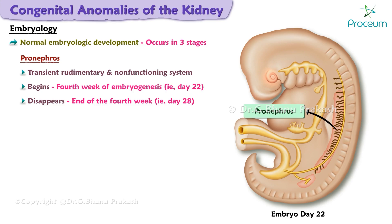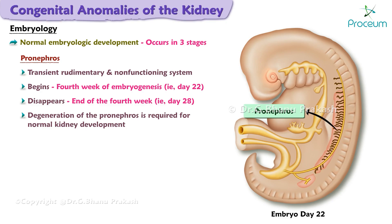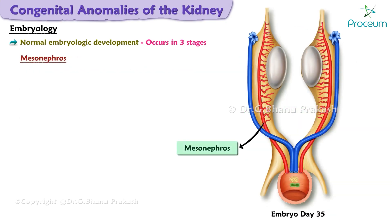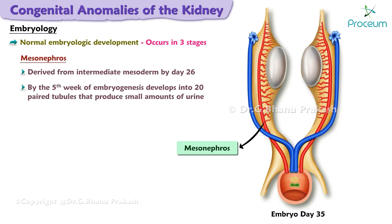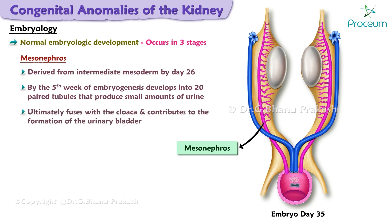Degeneration of the pronephros is required for normal kidney development. The mesonephros is derived from the intermediate mesoderm by day 26 and by the fifth week of embryogenesis develops into 20 paired tubules that produce small amounts of urine. The mesonephros ultimately fuses with the cloaca and contributes to the formation of the urinary bladder.